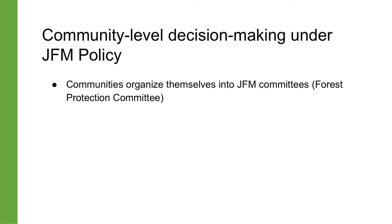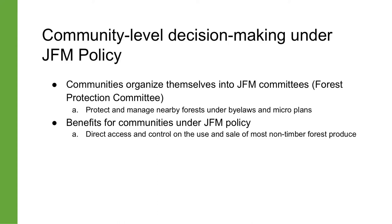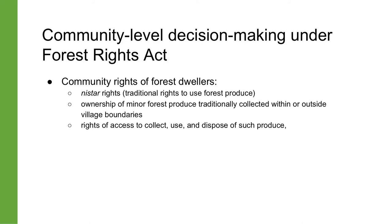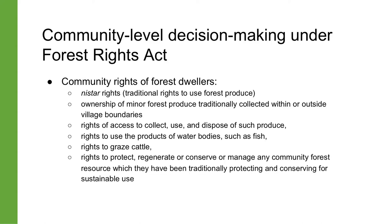Under the policy of joint forest management, communities organize themselves into JFM committees — usually known as Forest Protection Committees — to protect and manage nearby forests, guided by locally prepared bylaws and micro plans. Communities benefit through direct access and control over the use and sale of most non-timber forest produce and a share in timber income. However, these powers of forest departments and the obligations and privileges of forest dwelling communities under JFM policies need to be read with their rights and powers under the Forest Rights Act. Community rights of forest dwellers include Nistar rights — traditional rights to use forest produce — rights of ownership over minor forest produce traditionally collected within or outside village boundaries, rights to access, collect, use and dispose of such produce, rights to use water bodies, rights to graze cattle, and rights to protect, regenerate, or manage any community forest resource they have been traditionally protecting for sustainable use.